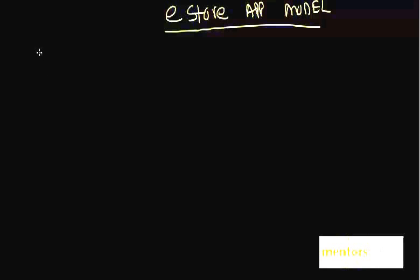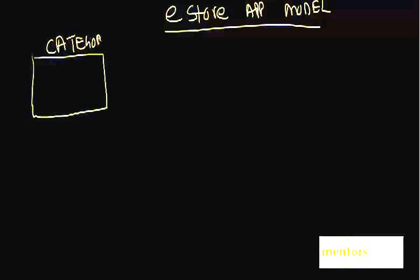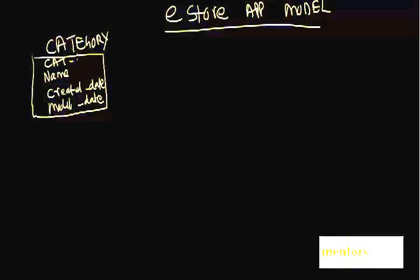In this case the first thing we can think about is something called category. We discussed about different kinds of hardware, software, DVDs, and books — that is essentially a category. So that is our first entity. In the category entity I will have a name of the category, when this category was created, and if ever modified then I store the modified date. To uniquely identify a category I will add a primary key called category_id.